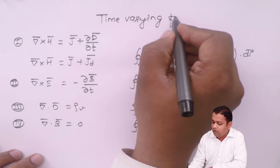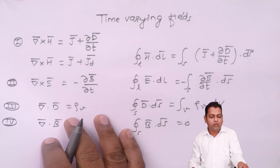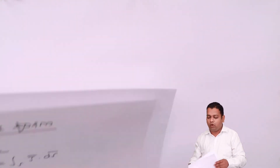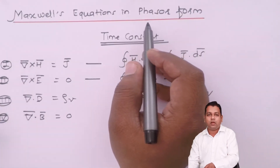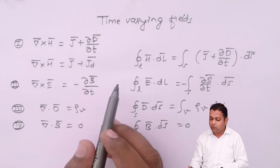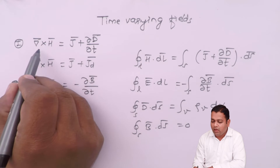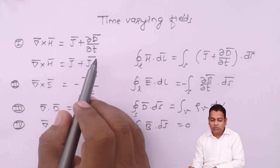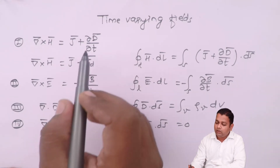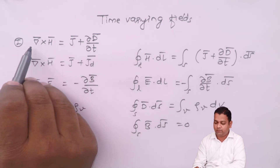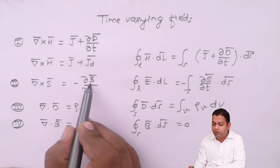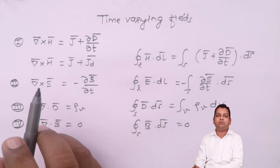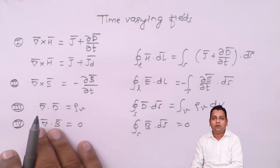These equations are applicable to time varying fields, giving us two sets of Maxwell's equations — one for time constant fields and one for time varying fields. From the first equation, the time varying electric field produces circulation of the magnetic field, and from the second equation, the time varying magnetic flux density produces circulation of the electric field. This is why the electric field and magnetic field parameters go hand in hand, forming what we call the electromagnetic wave.